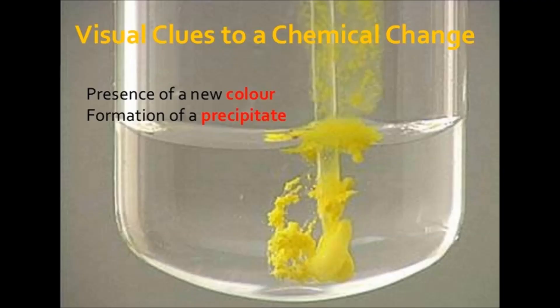Now we will discuss the factors which prove that a chemical change has occurred. The first factor is the presence of a new color — a change in color shows that a chemical reaction has occurred. The second property is the formation of precipitates. Precipitates are insoluble substances in the solution.